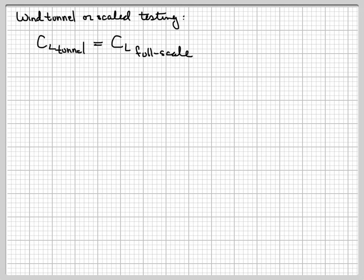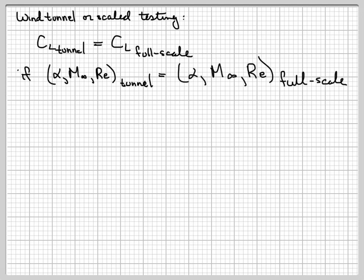If the angle of attack, Mach number, and Reynolds number in the tunnel match those of the full scale, then the lift coefficients will be the same between the tunnel and the full scale. The lift won't be the same in most cases, but the lift coefficient will — and that's what matters. So I can do wind tunnel testing where, if I match the input parameters non-dimensionally, I will have the same non-dimensional coefficients, and I can use the non-dimensional results from the tunnel to determine what the lift in the full scale would be.